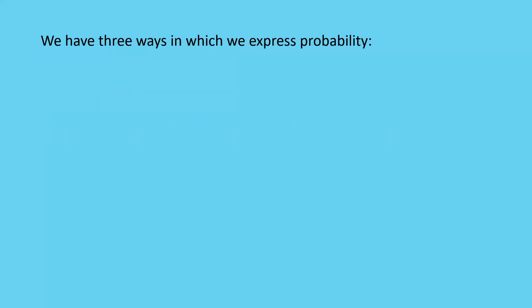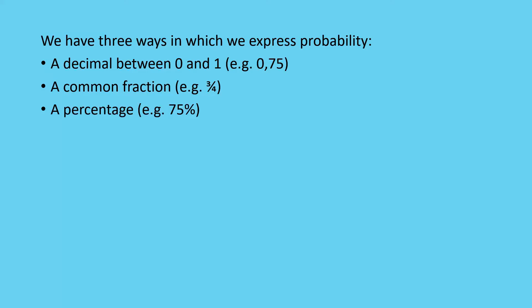We've got three ways that we can express probability. The first way is to use decimals between 0 and 1, e.g. 0.75. That also can be expressed as a common fraction, in this case 3 quarters. So three chances out of four. Or a percentage, 75%.